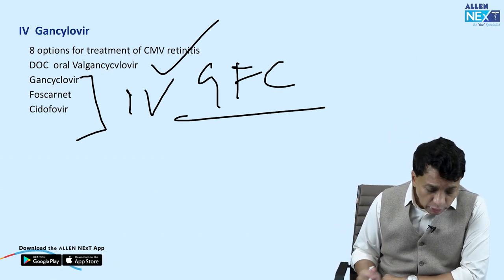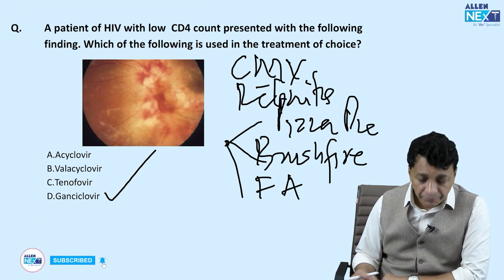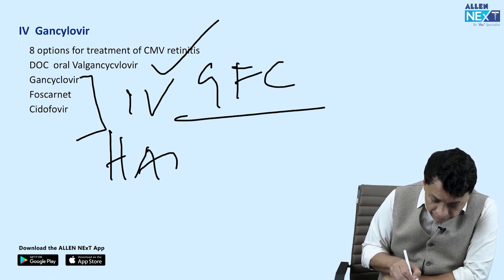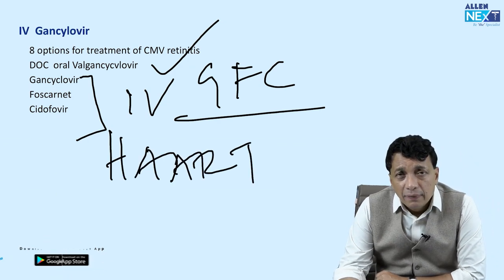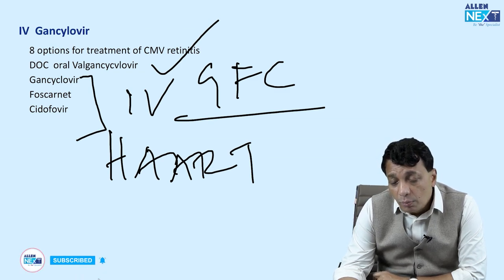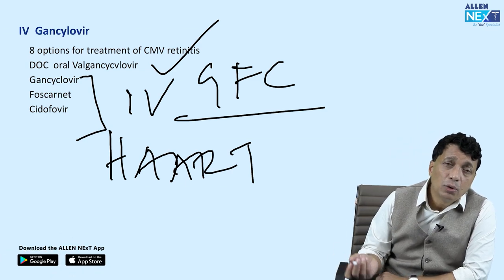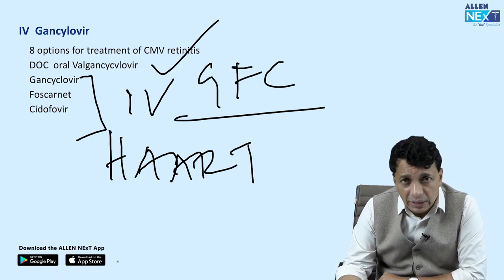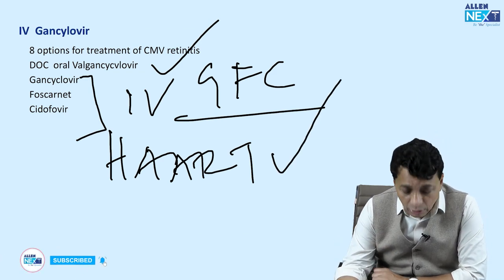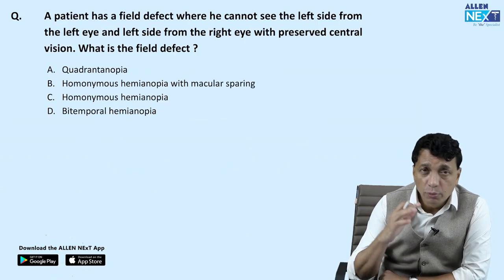The three important IV drugs for CMV retinitis are ganciclovir, foscarnet, and cidofovir — remembered by the mnemonic GFC (global financial crisis). All three are intravenous; only oral valganciclovir is given orally. Also remember that HAART therapy has reduced CMV retinitis from 70-80% to around 30% of HIV patients.